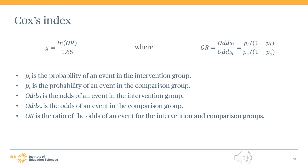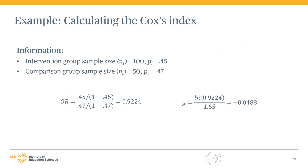You can find more information about this formula in Appendix E of the WWC Procedures and Standards Handbook. In this example of how to calculate Cox's index, 100 students are in the intervention group and 50 students are in the comparison group. The dichotomous variable of interest is whether students reached grade-level proficiency on a mathematics test. In this example, 45% of intervention group students were proficient and 55% were not, while 47% of comparison group students were proficient and 53% were not. We can transform these percentages into probabilities by dividing by 100. The resulting Cox's index effect size value is negative 0.0488, indicating that the intervention group average is 0.0488 standard deviations smaller than that of the comparison group.